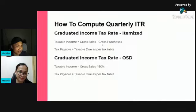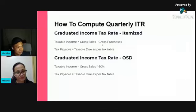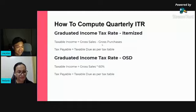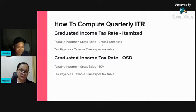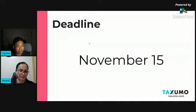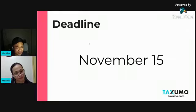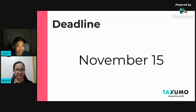For the graduated income tax rate, there are two kinds: itemized and OSD. For itemized deductions, you list down all your expenses, so it's gross sales minus gross purchases, and you refer to the TRAIN tax table to determine how much tax to pay — Taxumo calculates this automatically. For OSD under graduated income tax rate, taxable income is gross sales times 60%, then refer to the TRAIN tax table. The deadline is November 15, so the sooner you finish your 1701Q, the less hassle.